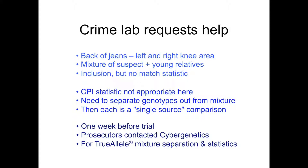The Baltimore Crime Lab requested help in processing this case in a fairly short time frame. The evidence was clothing from the back of a set of jeans from the left and right knee areas. Each DNA sample developed was a mixture of the suspect along with his young relatives. There was an apparent inclusion in the data, but no match statistic could be developed, because the combined probability of inclusion or CPI statistic is not appropriate for these complex mixtures, particularly when relatives are contained in the mix.